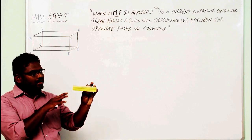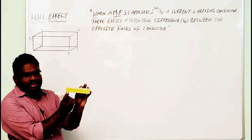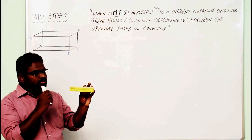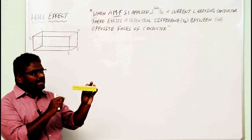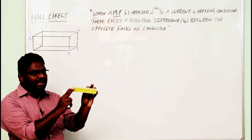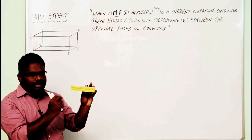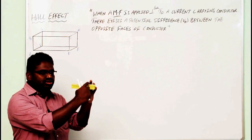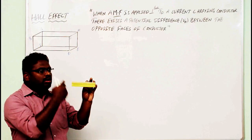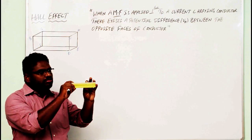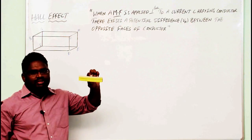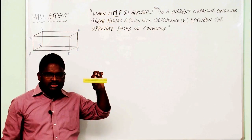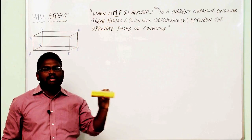If we apply current in the x-direction, there exists a magnetic field in the z-direction. Since both x and z directions are perpendicular, we are applying the magnetic field and current in perpendicular directions. Then the opposite faces — top and bottom — are equipped with positive charge and negative charge. Automatically, the two ends are charged with opposite charge carriers, so there exists a potential difference. By studying that potential difference, one can decide whether the material is of n-type or p-type.